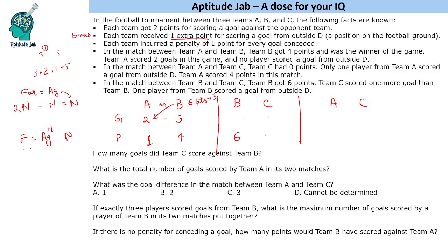Setting net points equal to six: N equals six, so B scored six goals and C scored seven goals. B's points: 12 from goals plus one bonus minus seven conceded equals six points. C's points: 14 from seven goals minus six conceded equals eight points. So the B vs C scoreline is 6–7 in goals, with points six and eight.